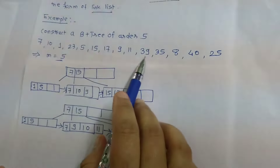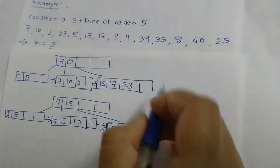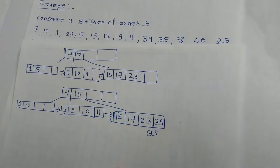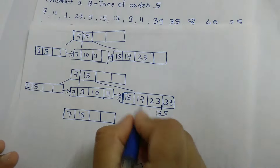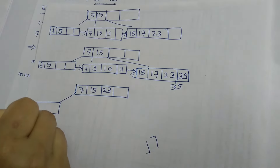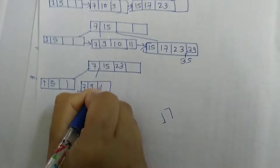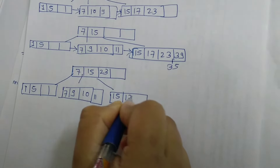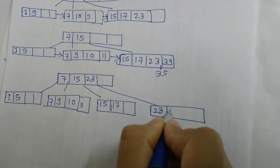The next element is 39. The position of 39 is to the right of 23, no issue. The next element is 35. The position of 35 would be in the rightmost leaf node, but there are already 4 keys — it is blocked. So one key will go up: the middle element, 23, will go up. The root now becomes 7, 15 and 23. Left of 7 is 1 and 5; right of 7 is 7, 9, 10 and 11; right of 15 is 15 and 17; right of 23 is 23, 35 and 39.